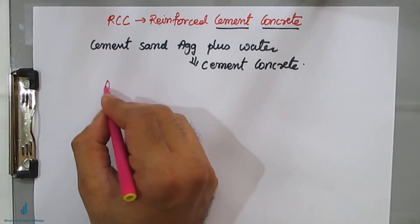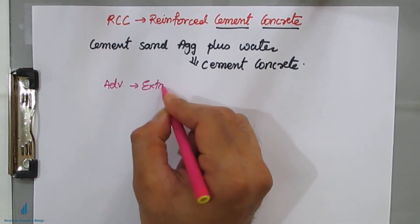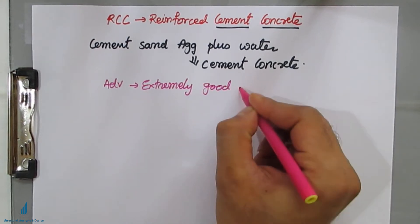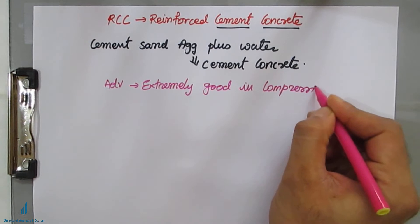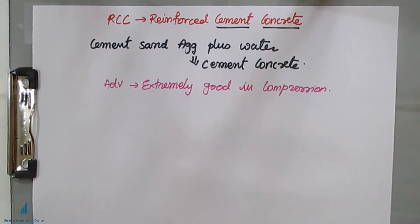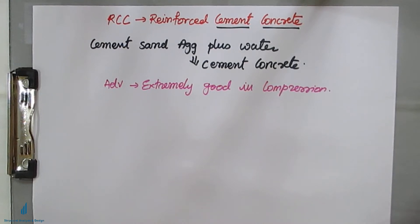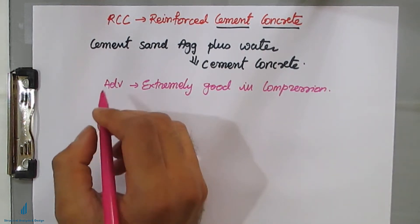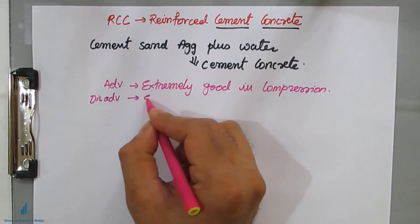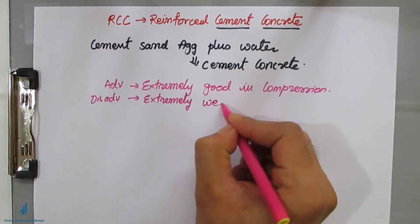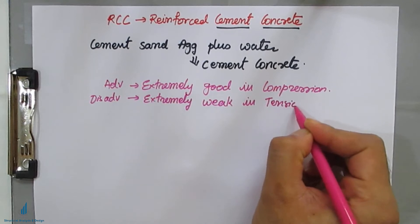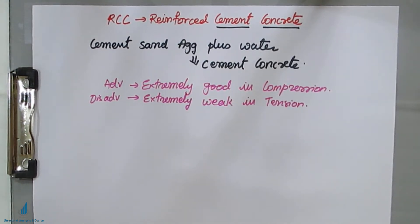The biggest advantage of concrete is that it is extremely good in compression. We cast a cube of standard size and test it in a compression testing machine — I will share that CTM video in the description box. So the advantage of concrete is it is very good in compression, but the biggest disadvantage is that it is extremely weak in tension.